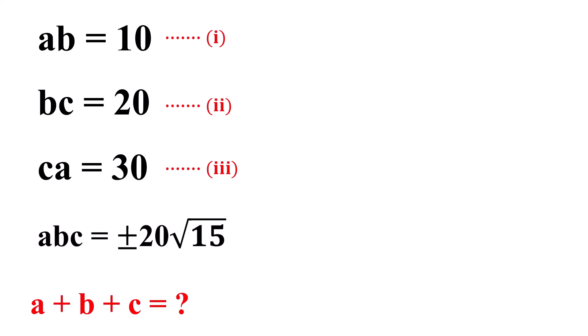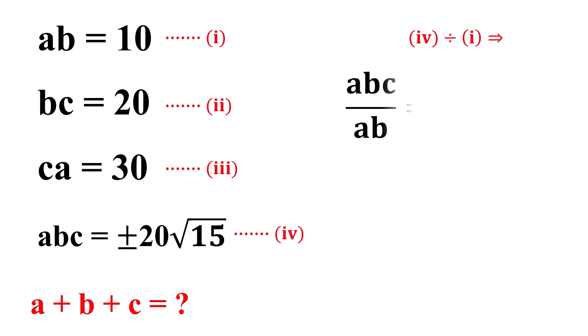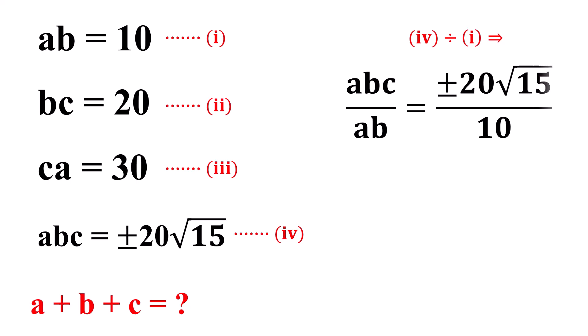Let's call this equation 4. Now, dividing equation 4 by equation 1, we get ABC over AB equals plus or minus 20 times the square root of 15 over 10. Or, the value of C equals plus or minus 2 times the square root of 15.